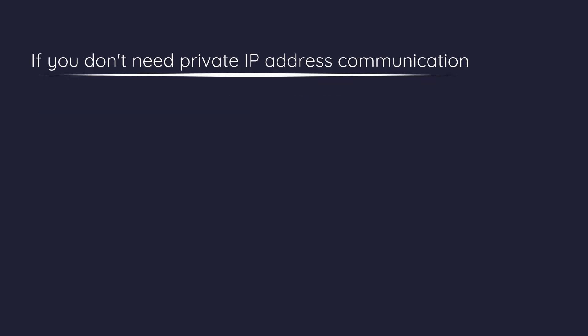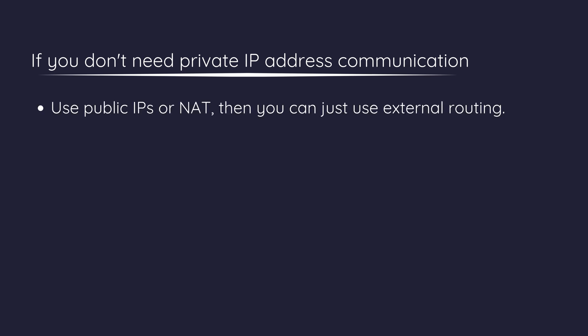If you don't need private IP communication — like if your resources can safely use public IPs or NAT — then you can just use external routing. This might be useful if you're connecting to a public API that doesn't require secure private communication.